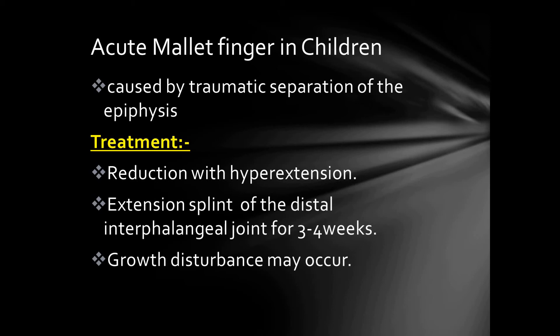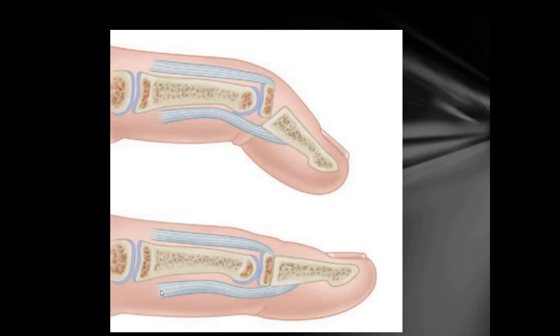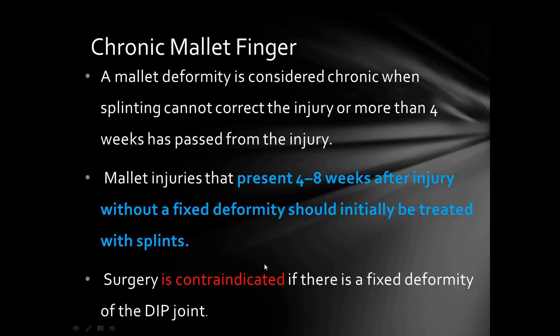For acute mallet finger in children, it is usually caused by traumatic separation of the epiphysis. The fracture is first reduced with hyperextension, then an extension splint of the distal interphalangeal joint is applied for 3 to 4 weeks. Growth disturbance may occur.